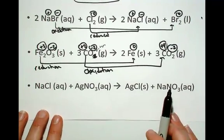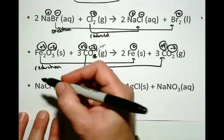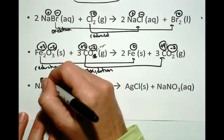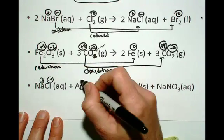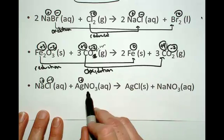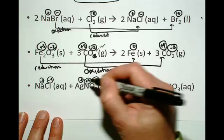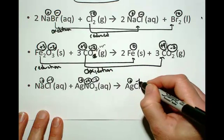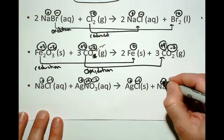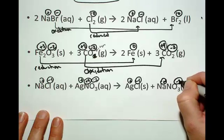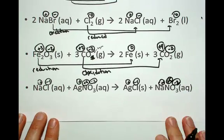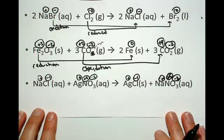Now for this one, go across and label your oxidation numbers. You have plus one, minus one, plus one. This is nitrate, it's going to be minus two, and the nitrogen is going to be plus five. Plus one, minus one, plus one, minus two, and plus five. Take a look now, where have the oxidation numbers changed?